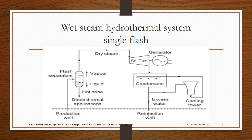The figure shows the wet steam hydrothermal system — single flash. Flash separators are used to separate out particles, and only the vapor portion is allowed to pass to the turbine. The hot brine available can be used for direct thermal applications. The remaining parts are similar to the dry steam system.